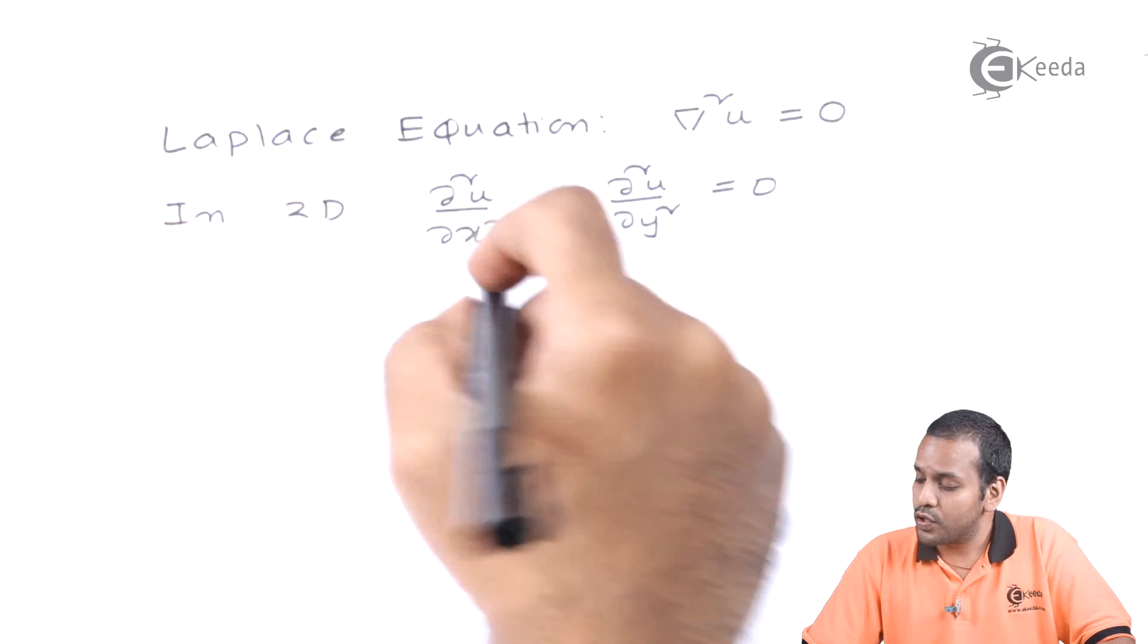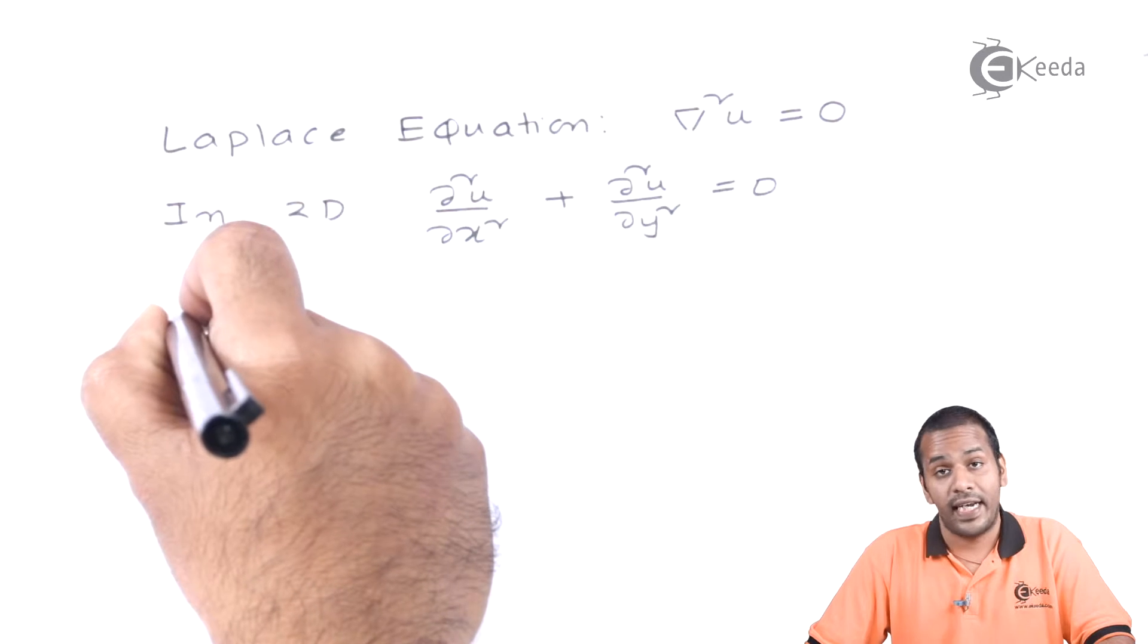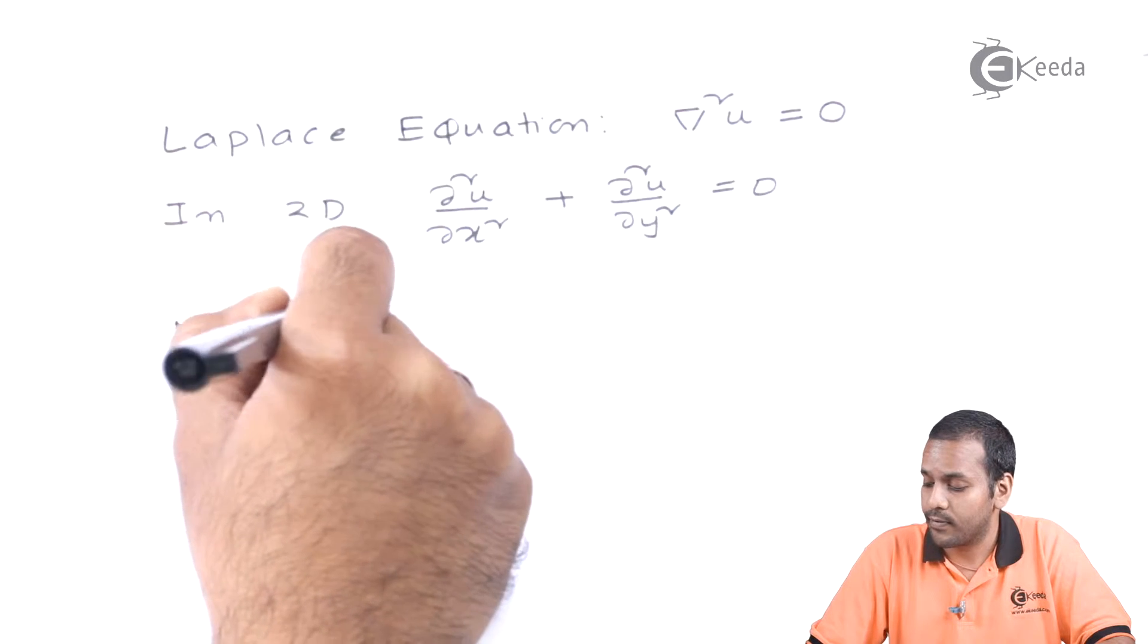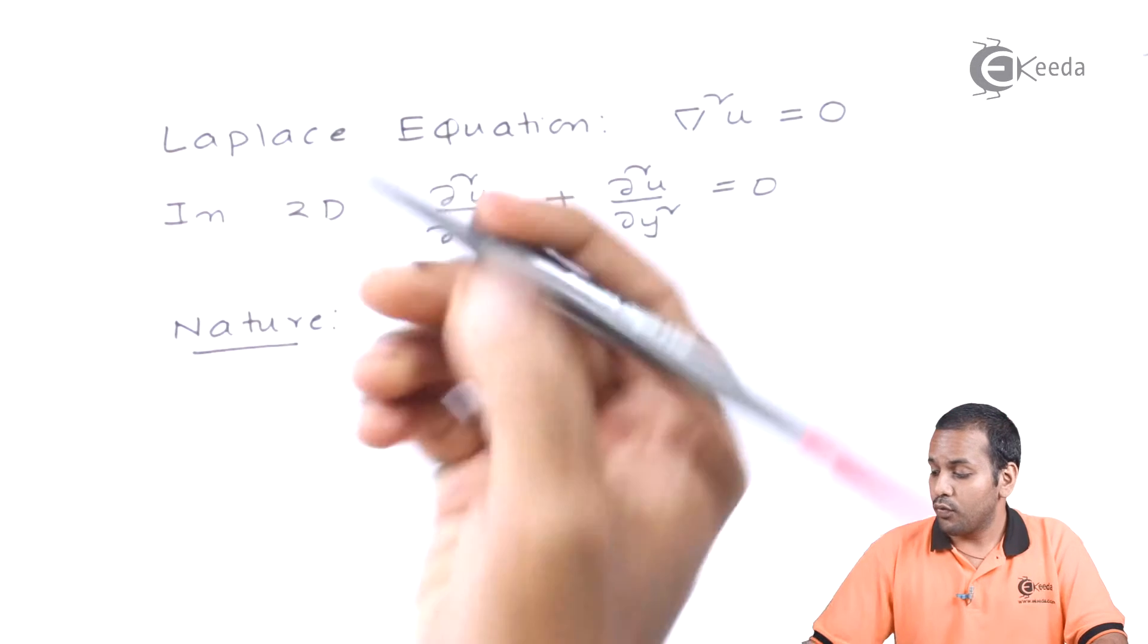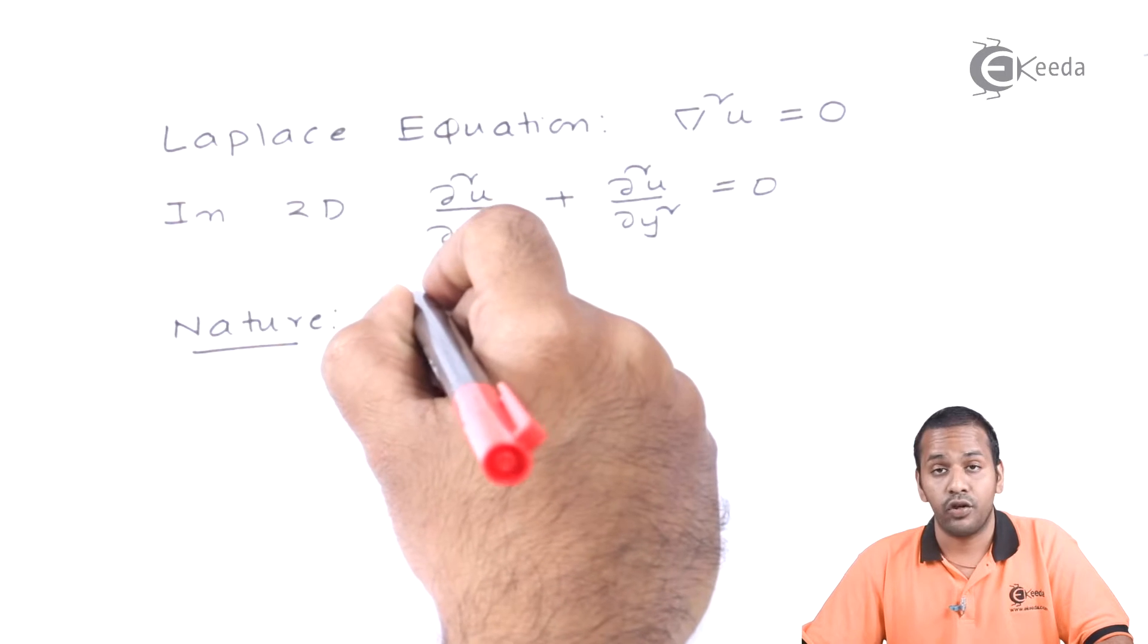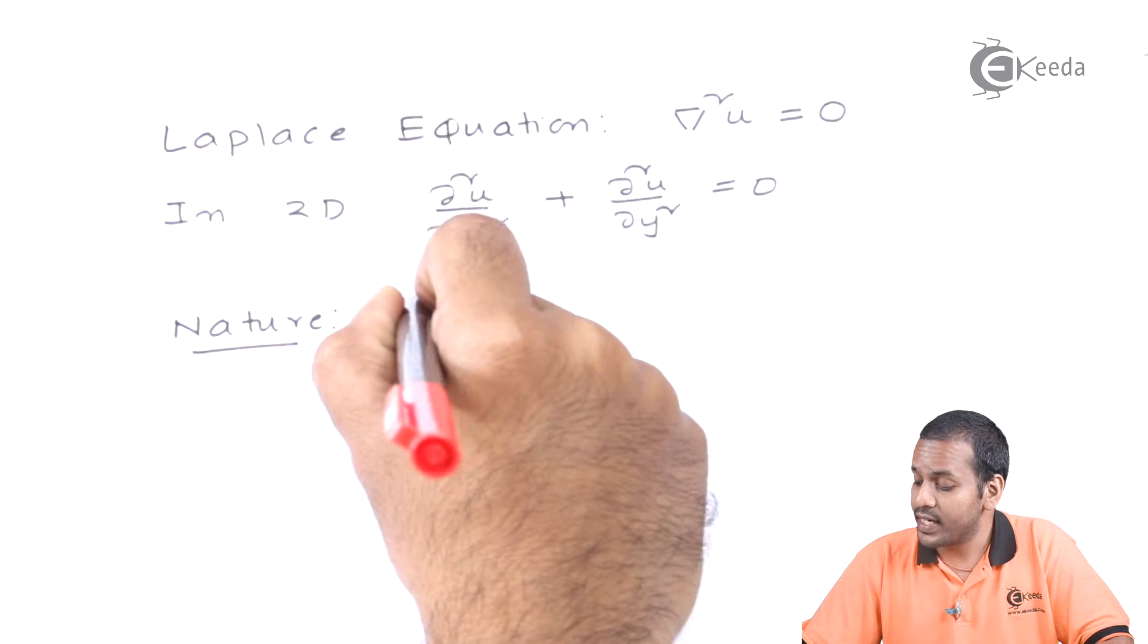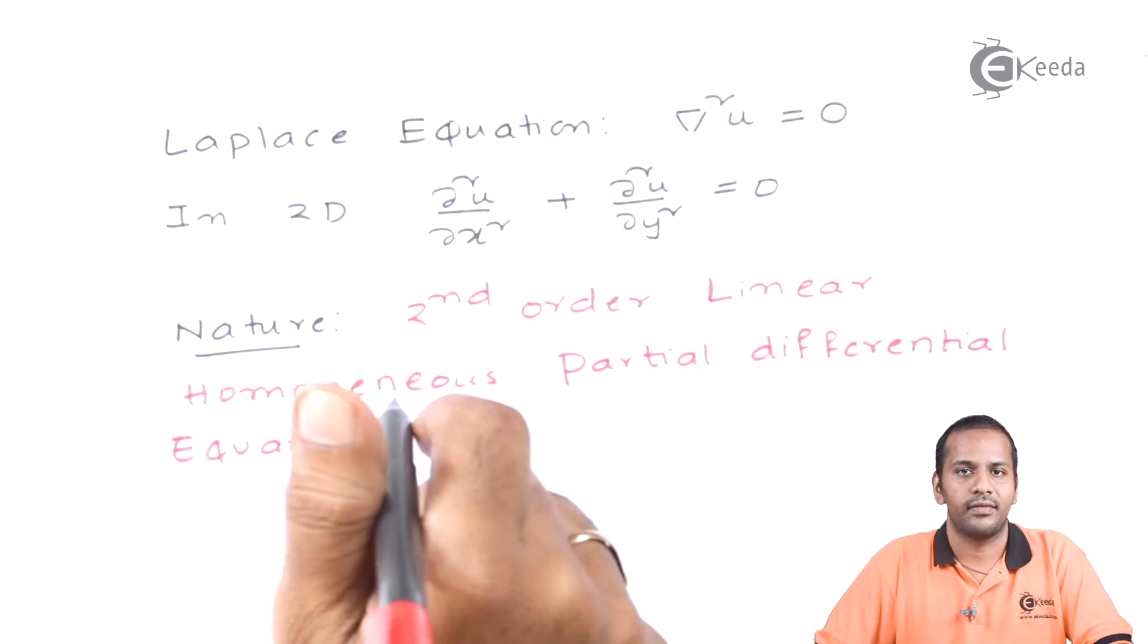First, let's see the nature of the equation. Do you know what this equation is - is it ODE or PDE? What is this, second order or third order? Can you comment about it? So this is a second order. How many conditions we need here? That is a very important thing. How many boundary conditions we need to solve this problem?